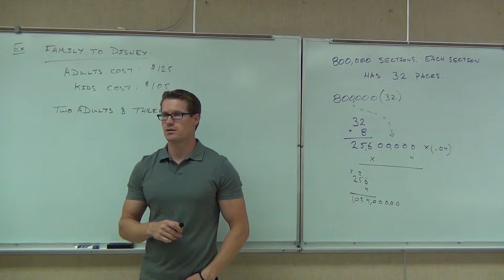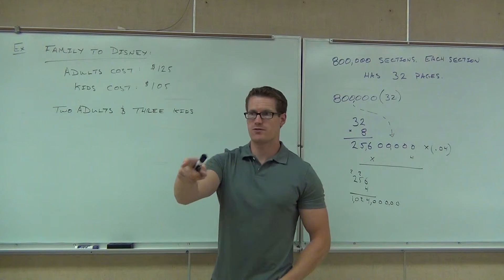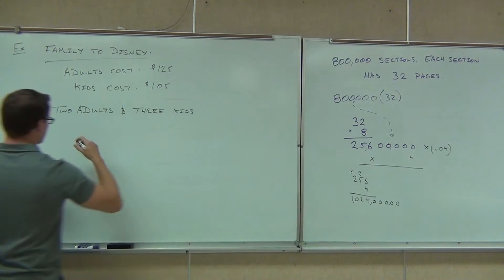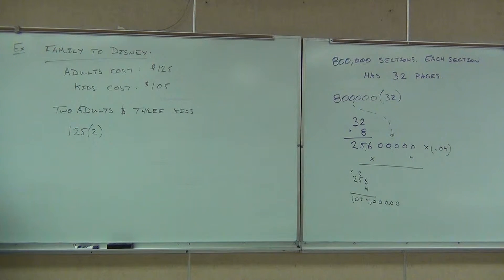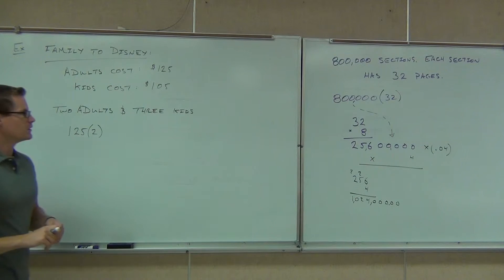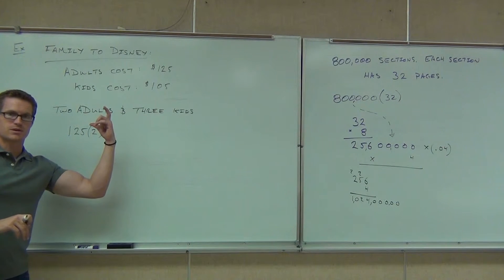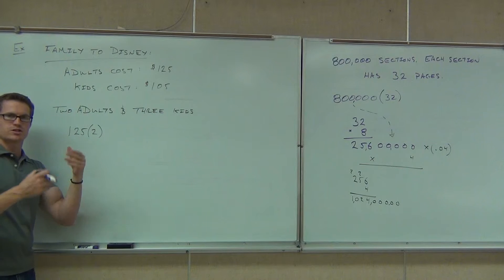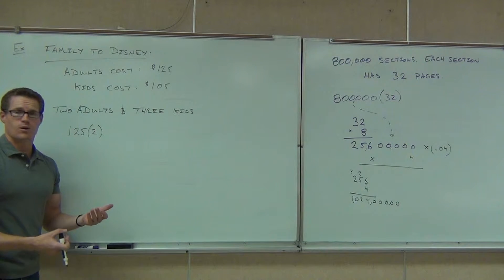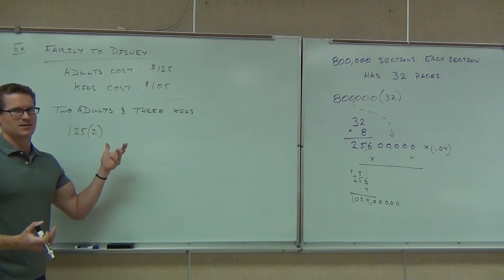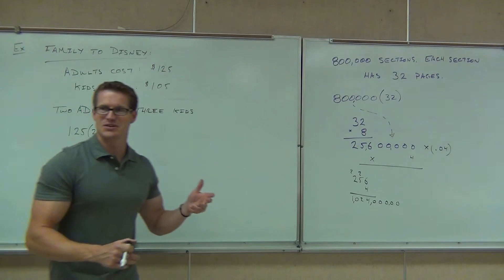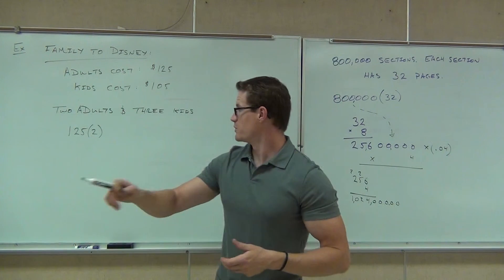So give me one thing that we are going to need to multiply. 125 times 2. Good, great, because we have 125 and two adults. So that's one thing we're going to do. We could add those together, right, because multiplication times 2 is really just repeated addition. Or if you really want to, you could just add 2, 125 times. I can't blame you, but you could do that. Okay, so great, we're going to be able to figure this one out.